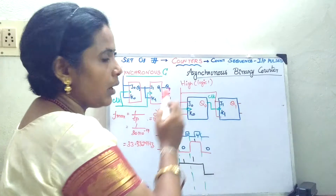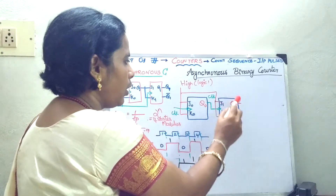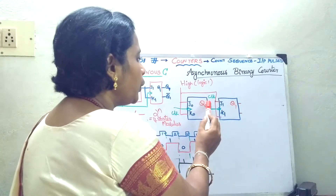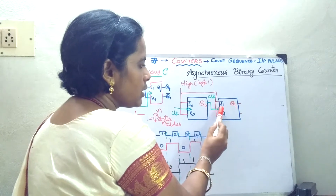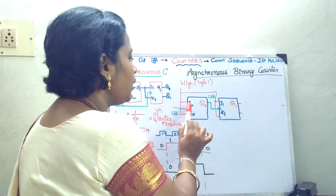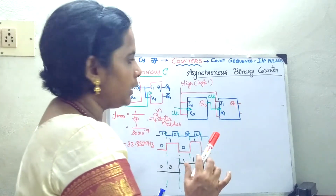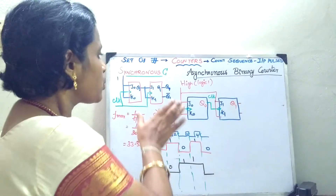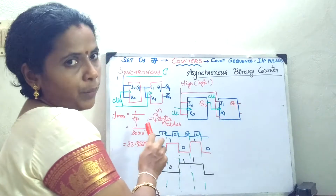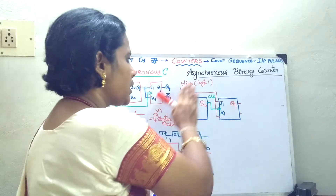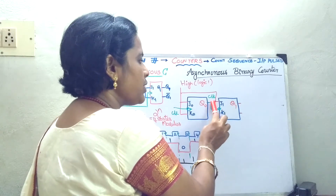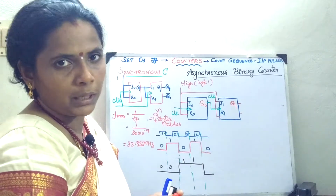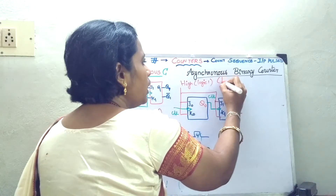Whereas whenever you go to your asynchronous counter, the first condition is to draw the flip-flop and give logic one to both the flip-flops. Here, the way you give your clock signal differs. The output of the first flip-flop will be fed as a clock signal for the second and succeeding flip-flops. The initial flip-flop is given a separate clock, and after that the output of the first flip-flop is the clock pulse for the second one.